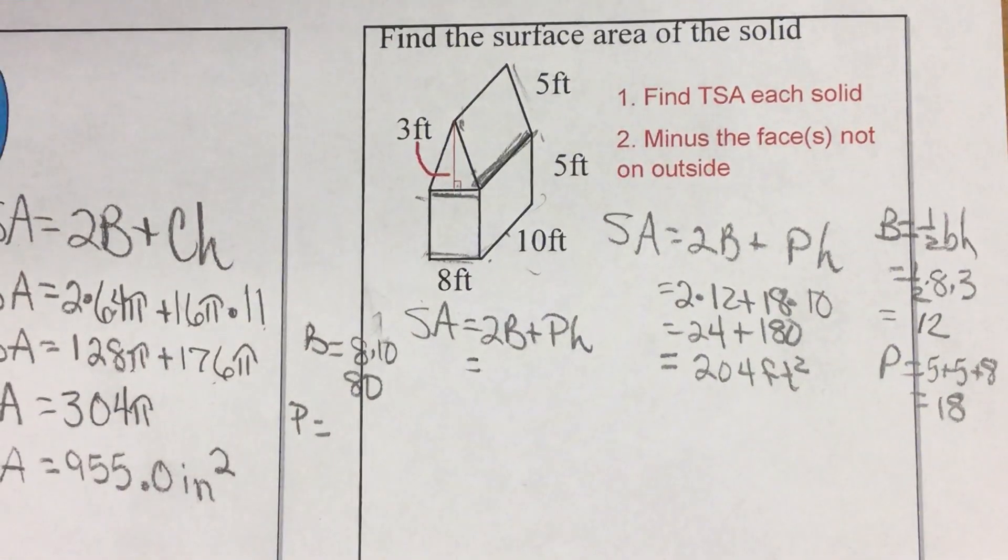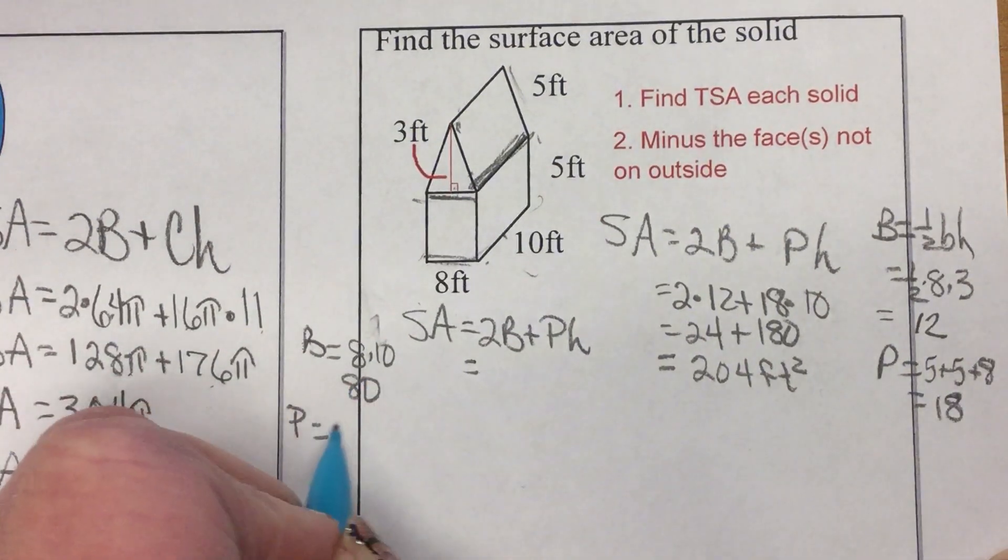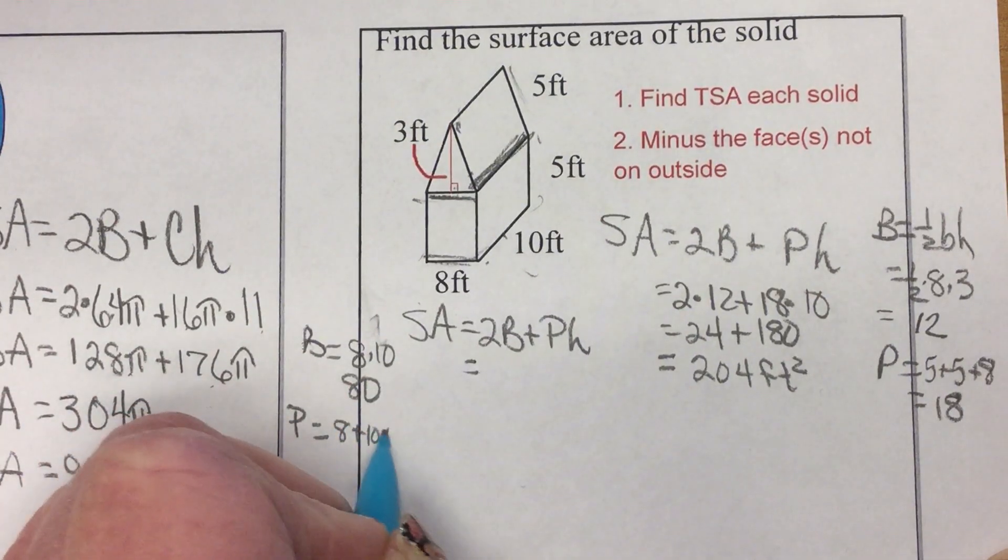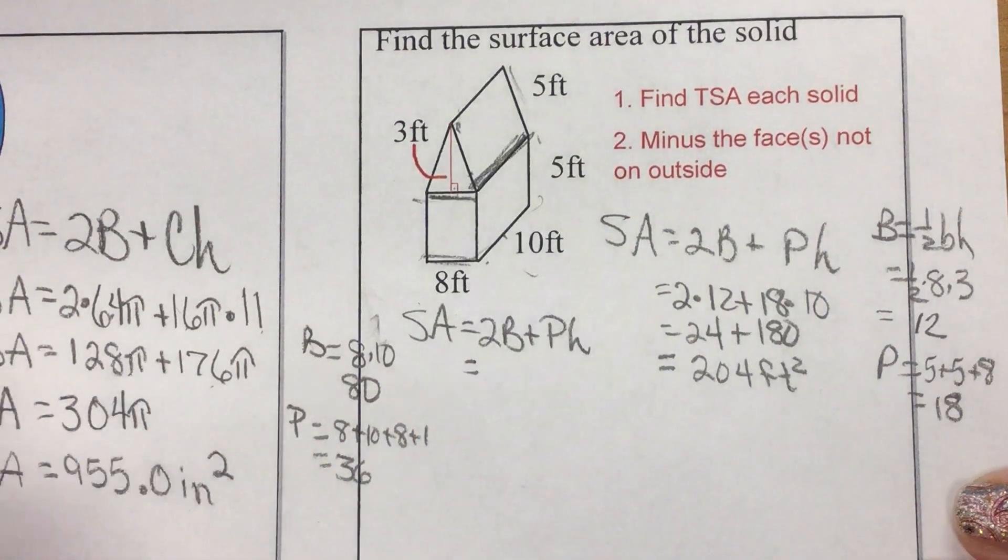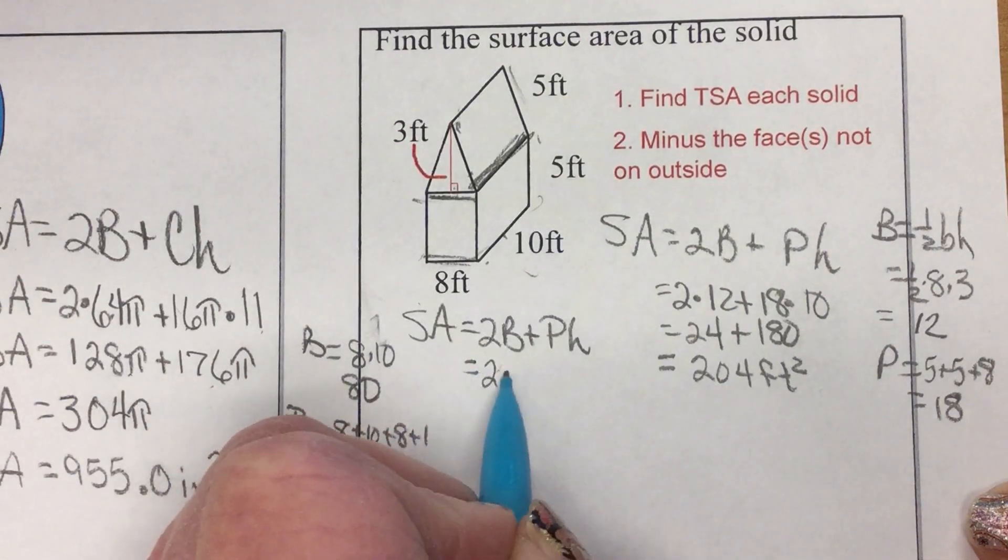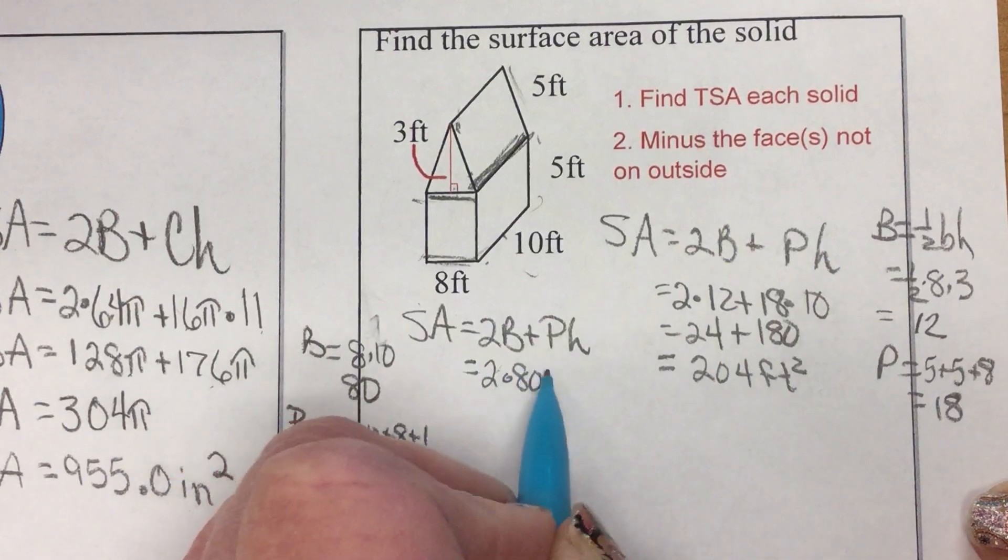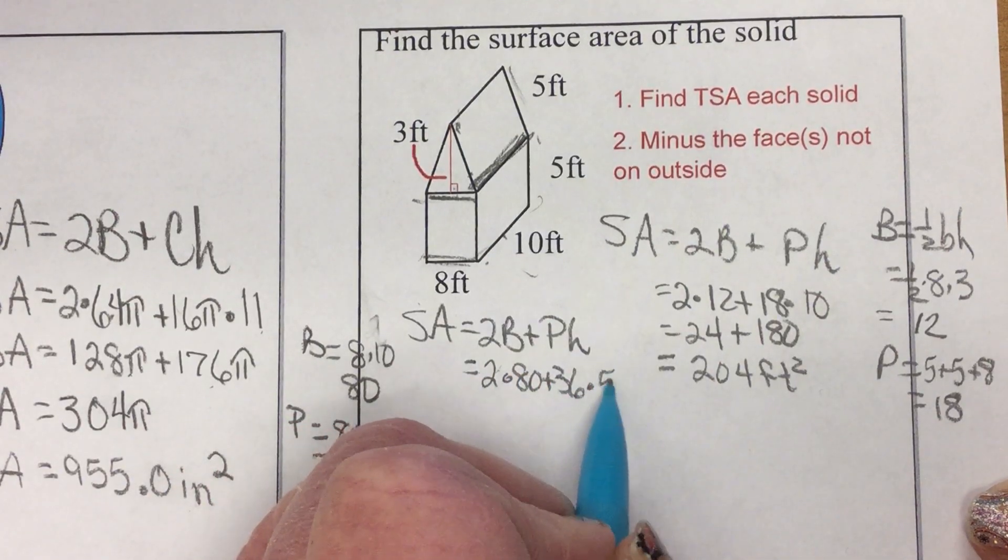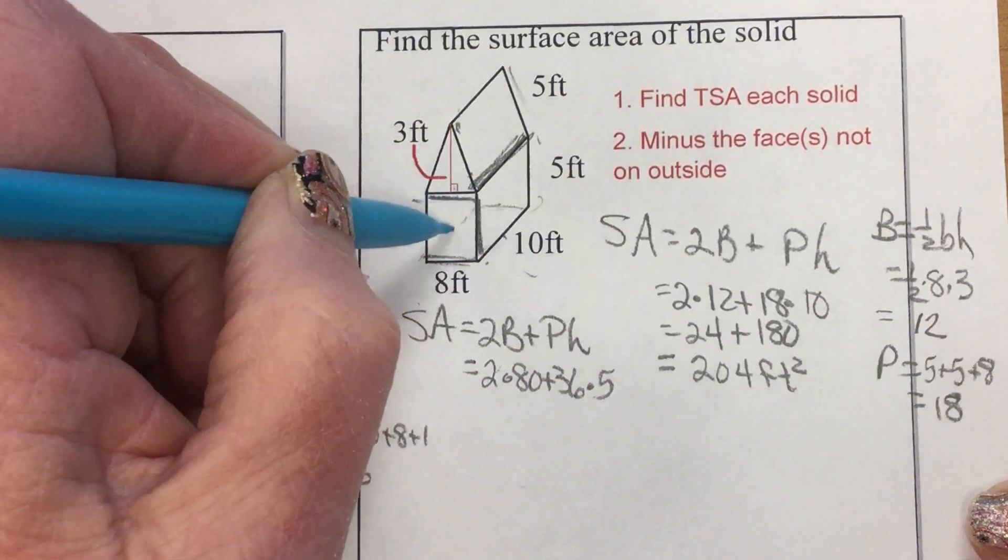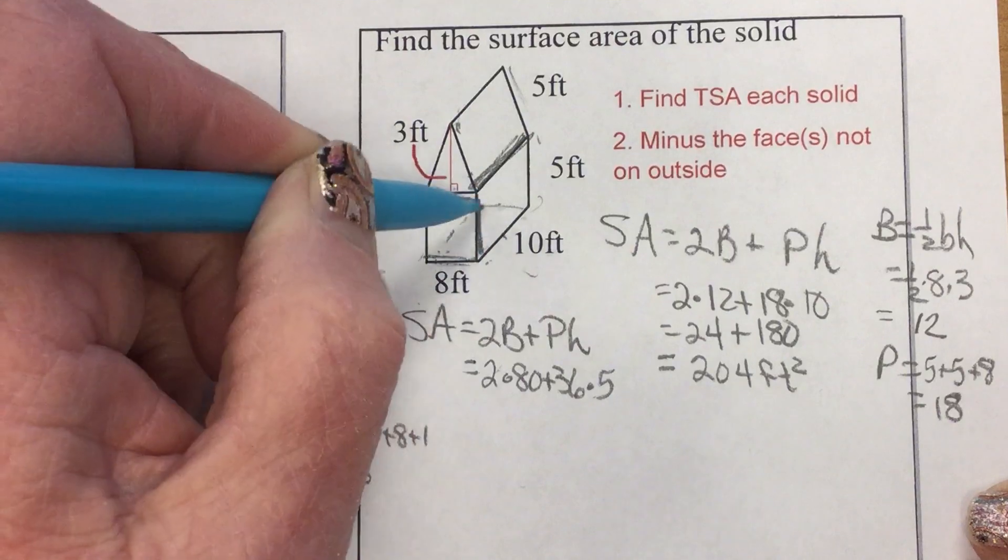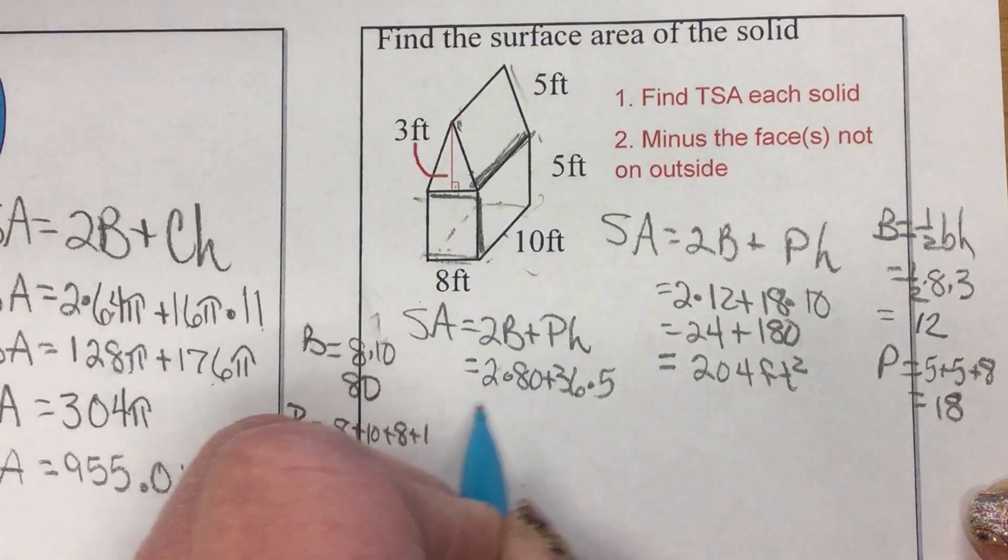My perimeter of that base. 8 plus 10 plus 8 plus 10, 36. So, 2 times 80 plus 36 times 5, because now this has a height of 5, because I counted this as my base, 8 by 10.